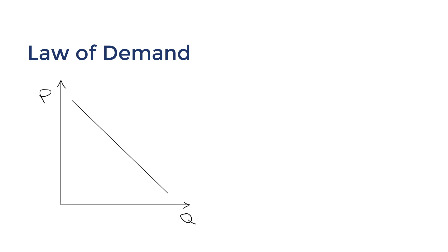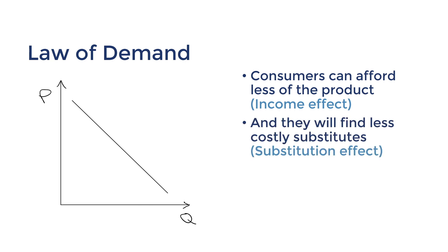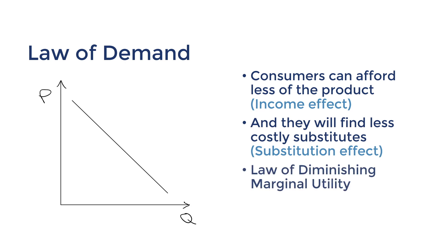Three reasons for this negative correlation are that consumers can afford less of the product — we call this the income effect — and they will find less costly substitutes, which we call the substitution effect. These are the two main arguments, but there's also the law of diminishing marginal utility, which is an extension concept.